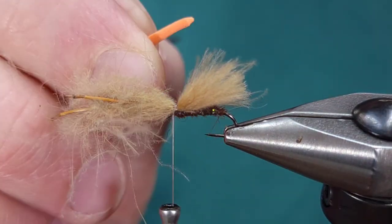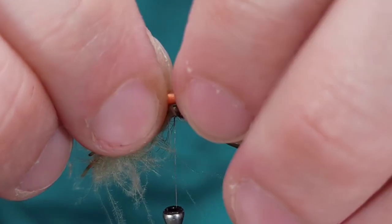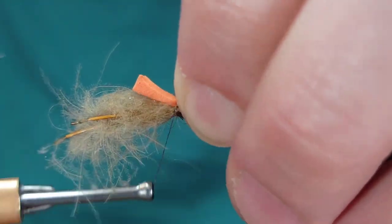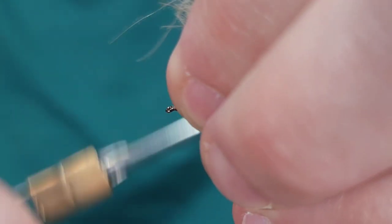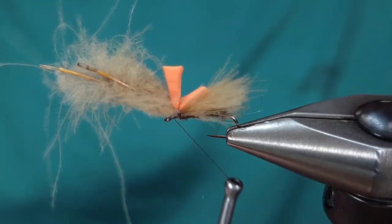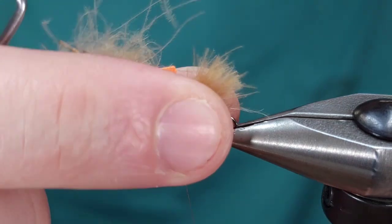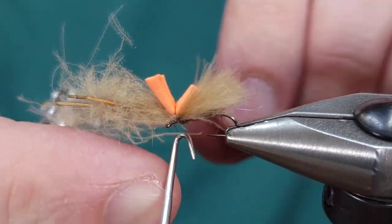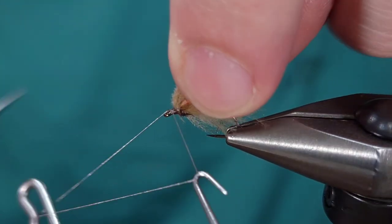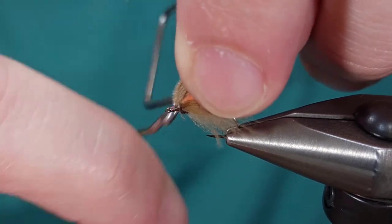For the hot spot on this I'm just using a piece of two millimeter scrap foam. That's really all you need. The foam does help a little bit with floating, but it really just acts as a hot spot. I personally like to fish this fly as a second dry fly behind a more buoyant fly.